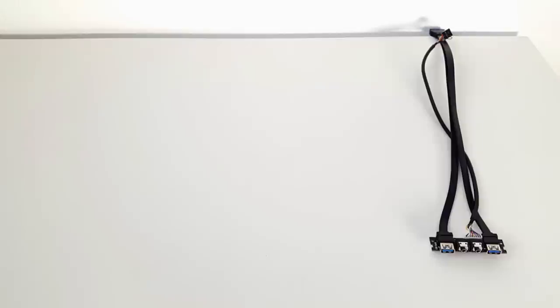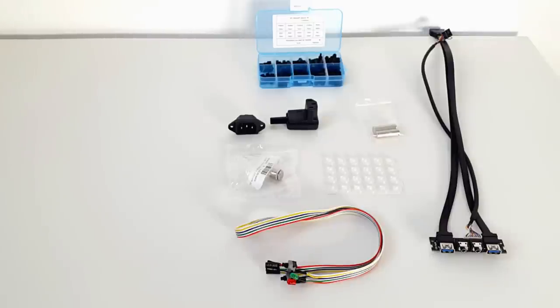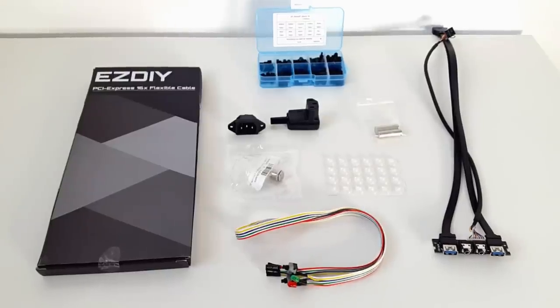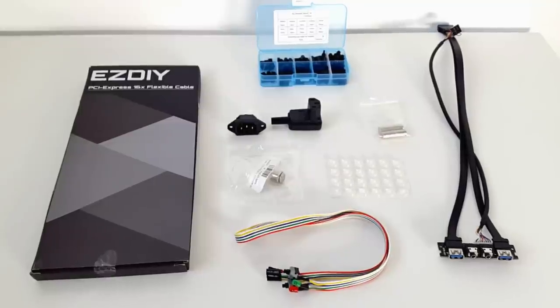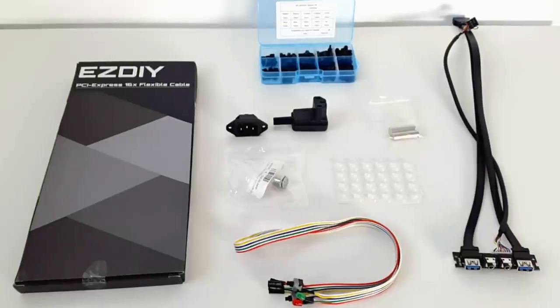Of course I needed some additional parts for the case. The front IO, standoffs for the motherboard and the graphics card, a power button, magnets, self adhesive rubber feet, a power cable, a motherboard power cable and LEDs and finally a PCIe riser cable for the graphics card. You can find links to all the parts that I used for this build in the description below.